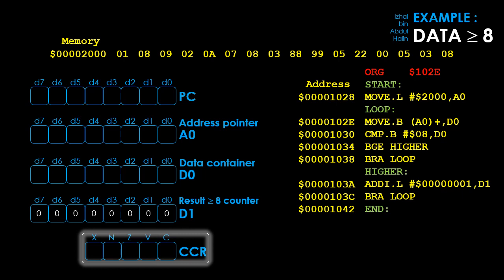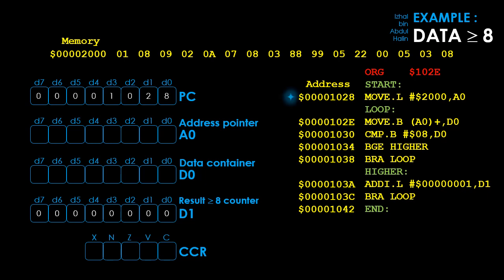Finally, we have the status register, also known as the condition code register. Upon execution, the instruction at address 1028 is pointed to by the program counter, which is then updated to point to the next instruction at address 102E. The instruction at 1028 is executed: 2000 is loaded into register A0. The status register is updated to 00000 because of the result of the move instruction.